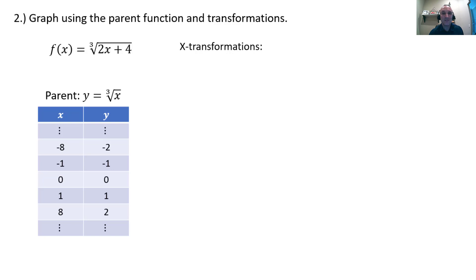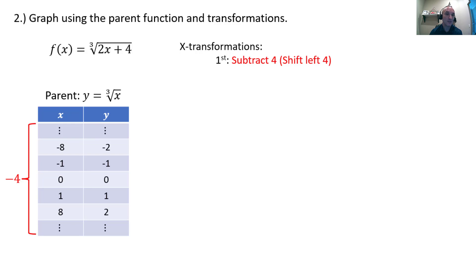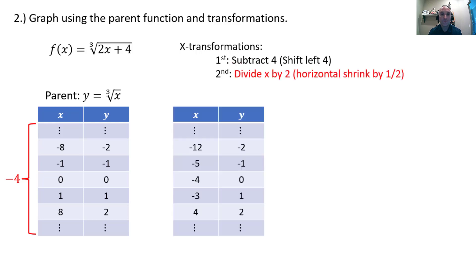We look at our operations happening to x and we inverse them. We see multiply by 2 and add 4. We inverse those and switch their order. So instead of multiply by 2 and then add 4, we're going to subtract 4 and then divide by 2. Subtracting 4 will shift our graph left 4 units because this is an x transformation. Then we go to our x column and subtract 4 from those x values. We get a new table of values, then divide those new x values by 2, which is a horizontal shrink by a half. Subtracting x values by 4 and dividing by 2 in that order gives us our final x-y table.